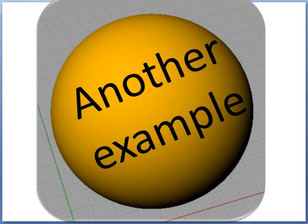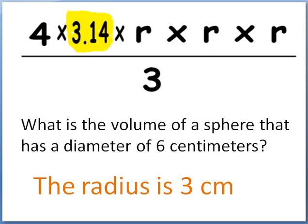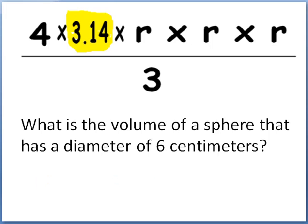So we'll take a look at another example. Here we have the same formula for pi times r cubed, expanded here. What's the volume of a sphere that has a diameter of 6 centimeters? Well, if it has 6 centimeters, the radius is 3 centimeters.